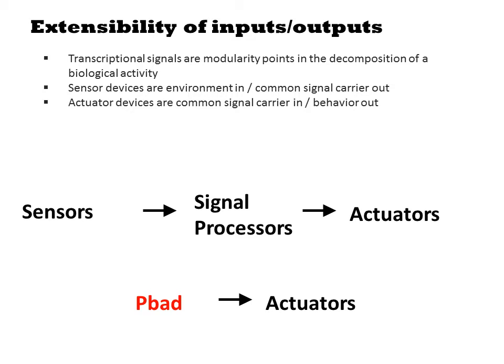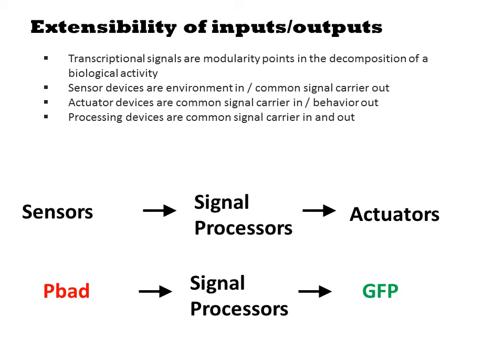You might vary arabinose concentration and monitor purple color, or you might quantify violacein by LC-MS assays as a function of arabinose input. Finally, there are signal processors which input transcription and output transcription. Inverters are examples of signal processors with a single input and single output. Various logic gates are also signal processors with multiple transcriptional inputs and a single transcriptional output. You typically characterize a signal processor by sandwiching it between an inducible promoter and an output fluorescent protein reporter, then monitoring fluorescence as a function of inducer concentration.